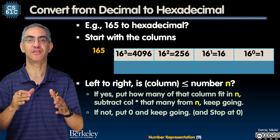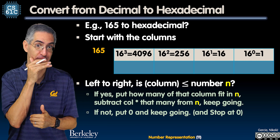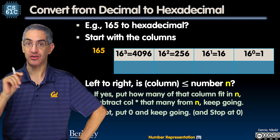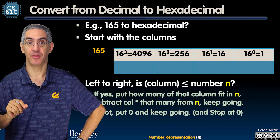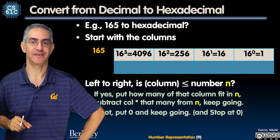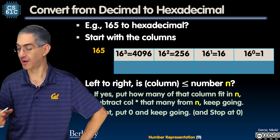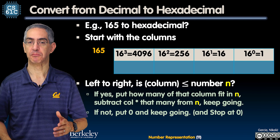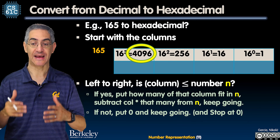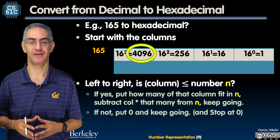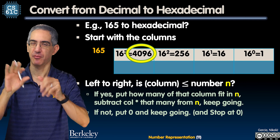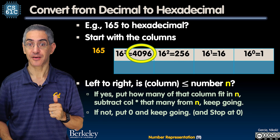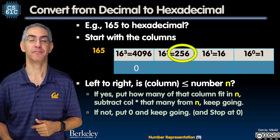Now let's convert from decimal to binary and to hex — reversing what we did before. This is an algorithm with some decision-making. The way I think about it — an analogy that's worked well for students: think of boxes to ship back to Amazon, labeled with those powers.